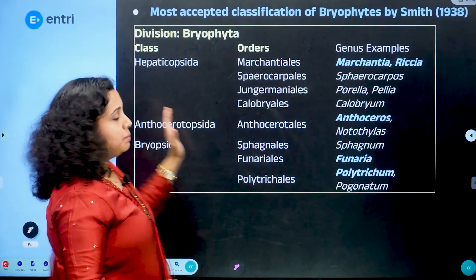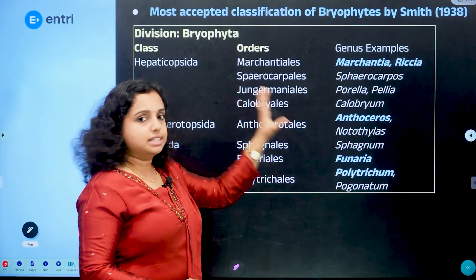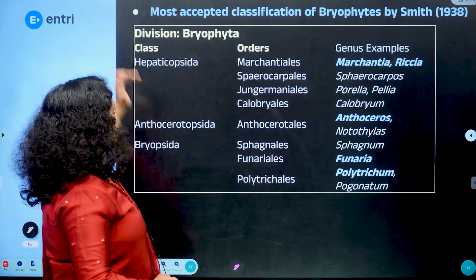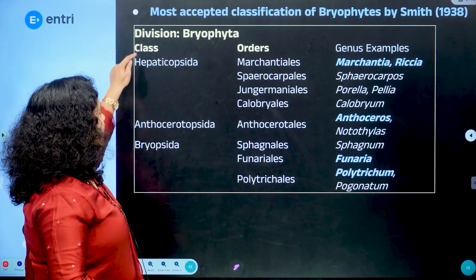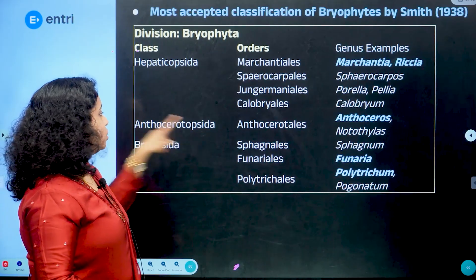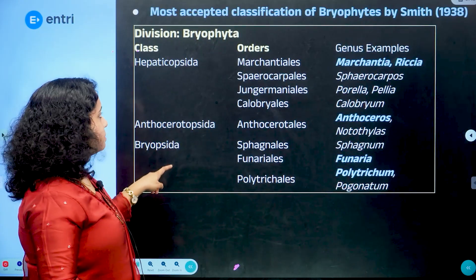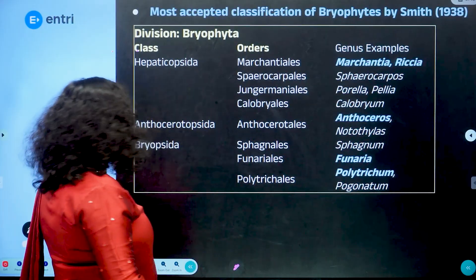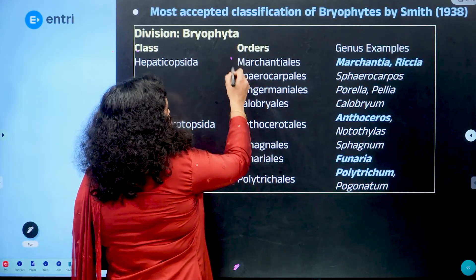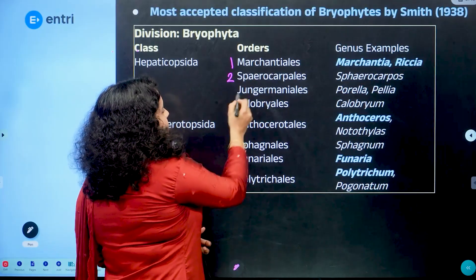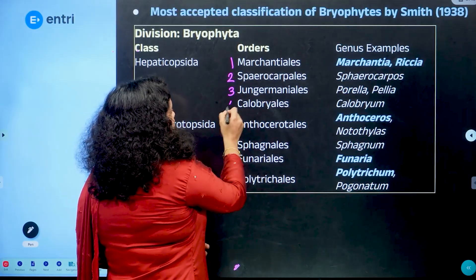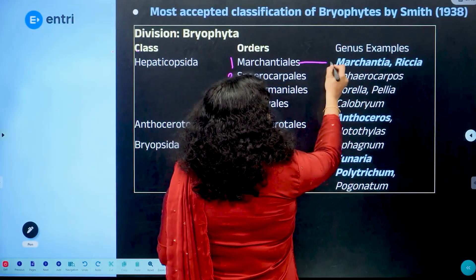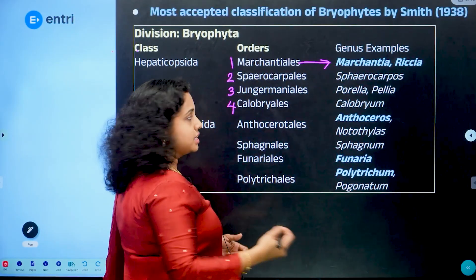For division Bryophyta, we have three classes. The first class is Hepaticopsida, the second is Anthocerotopsida, and the third is Bryopsida. Under Hepaticopsida, there are four orders: Marchantiales, Sphaerocarpales, Jungermanniales, and Calobryales.